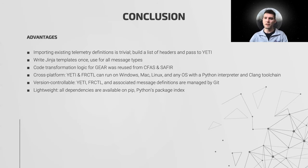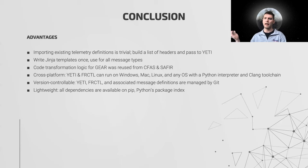In conclusion, the advantages of using Fractal and Yeti have so far been numerous. Importing an existing legacy code base into Yeti is trivial — the developer only needs to build a list of headers to be imported and pass them to Yeti. Jinja templates only need to be written once, after which they can be used for all imported code and data types. Transformation logic truly is reusable — we were able to take process nodes used for generating interfaces for our autonomy suite CFAS and apply them to GEAR, our middleware abstraction layer, without having to rewrite anything. Yeti and Fractal have proven to be cross-platform, running on macOS, Windows, Linux, or any operating system with a Python interpreter and Clang toolchain. They are readily controllable with Git or other version control systems and are extremely lightweight with minimal dependencies.